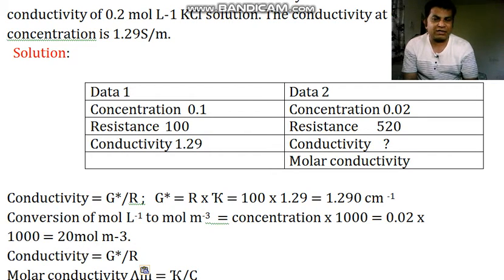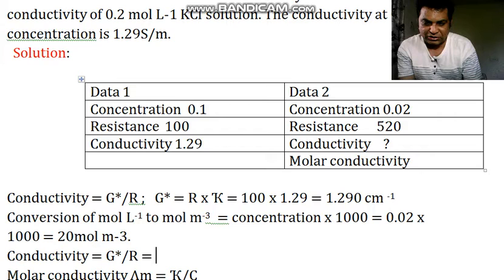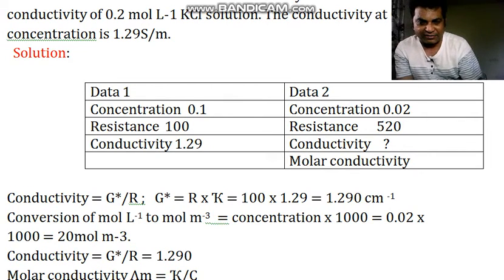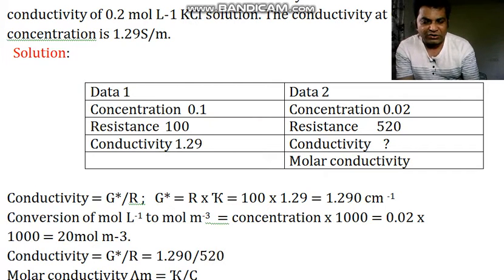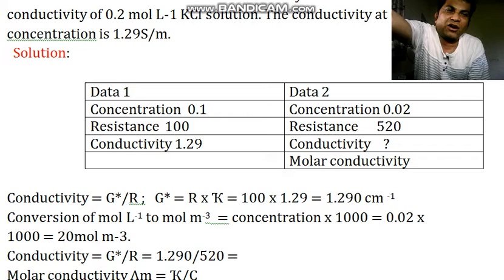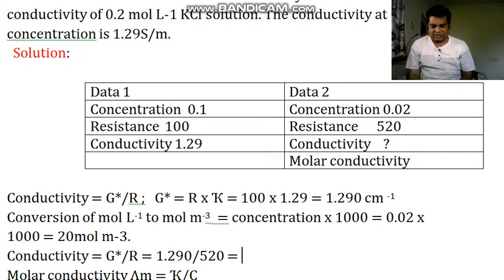And conductivity formula is conductivity equals G star divided by R. Now G star you have calculated as 1.290. So I have written G star as 1.290, and value of R for this 0.02 concentration is 520. So here I am writing 520. Do in your calculator what will be the answer. I am also doing this in calculator.